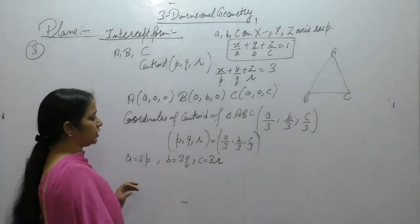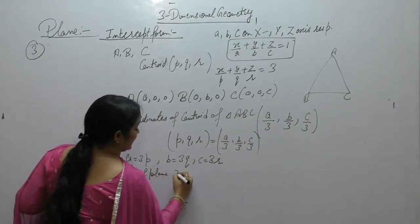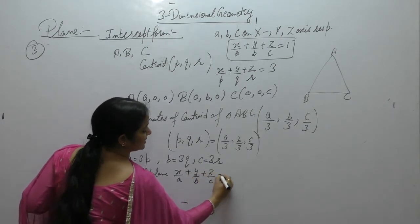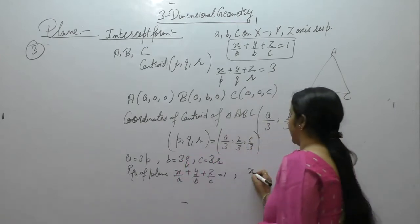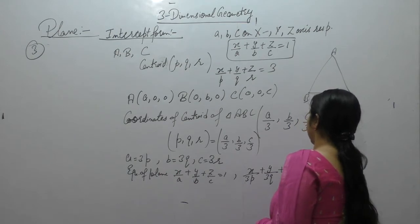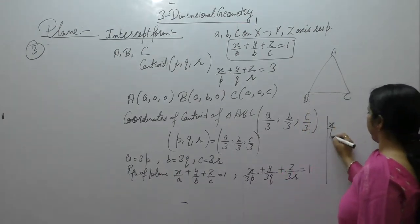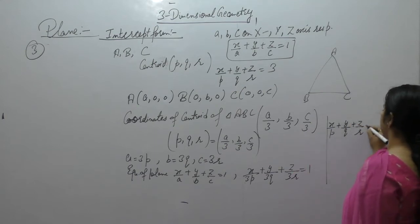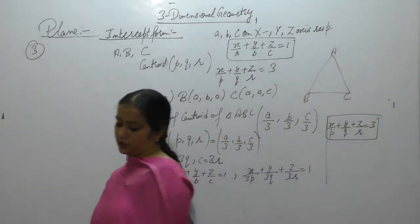The equation of a plane in intercept form is X/A + Y/B + Z/C = 1. Substituting A = 3P, B = 3Q, C = 3R, we get X/(3P) + Y/(3Q) + Z/(3R) = 1, which simplifies to X/P + Y/Q + Z/R = 3. This is the required equation of the plane.